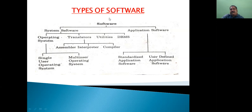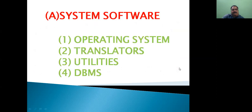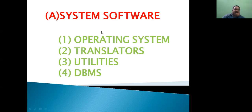The other type of software is application software. So software is of two types: system software and application software. System software is categorized into four categories — first is operating system, second is translator, third is utilities, and fourth is DBMS.